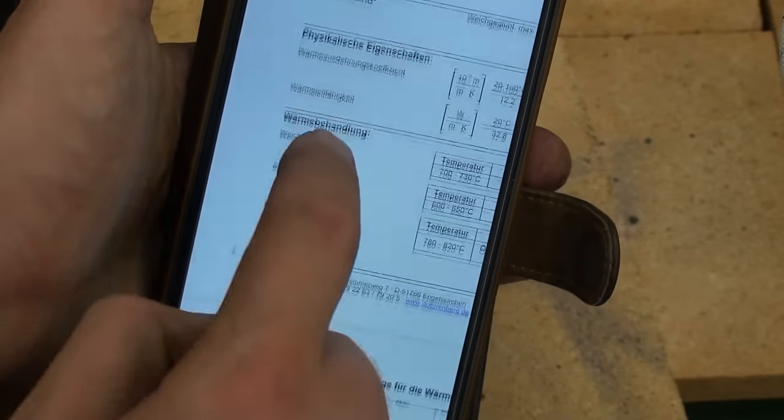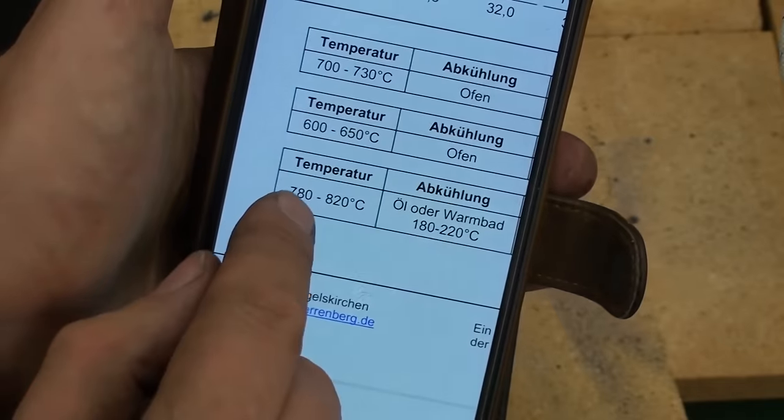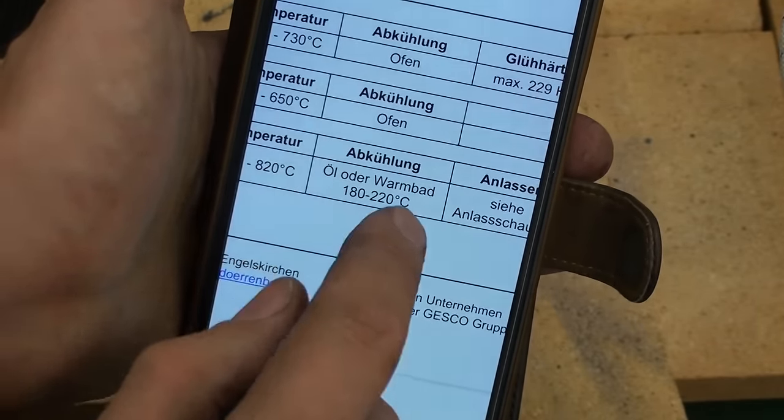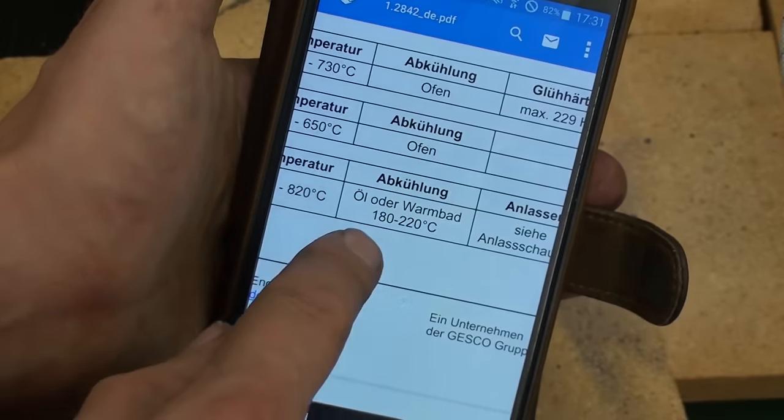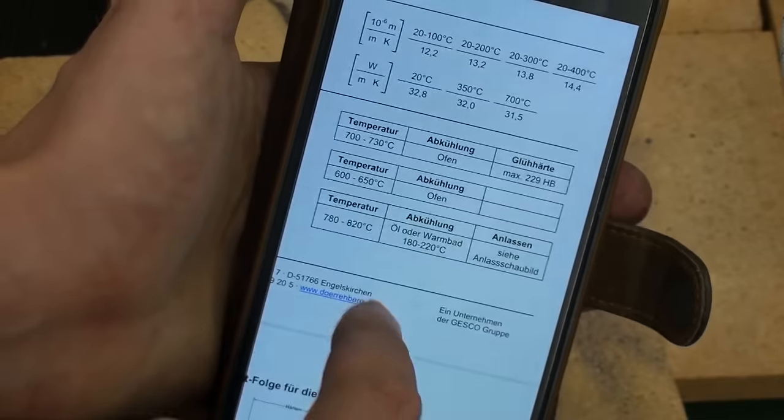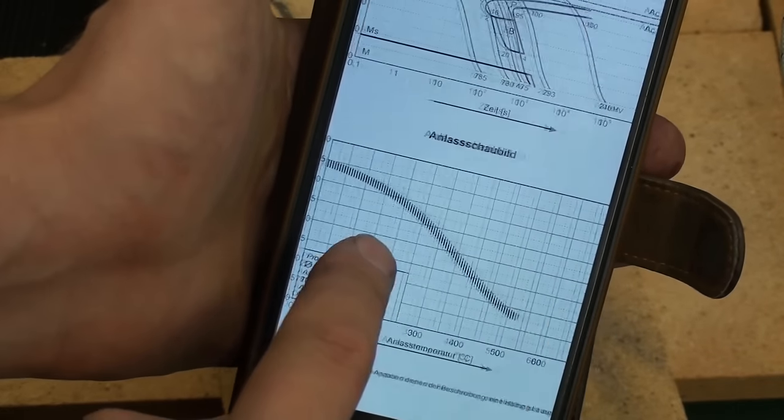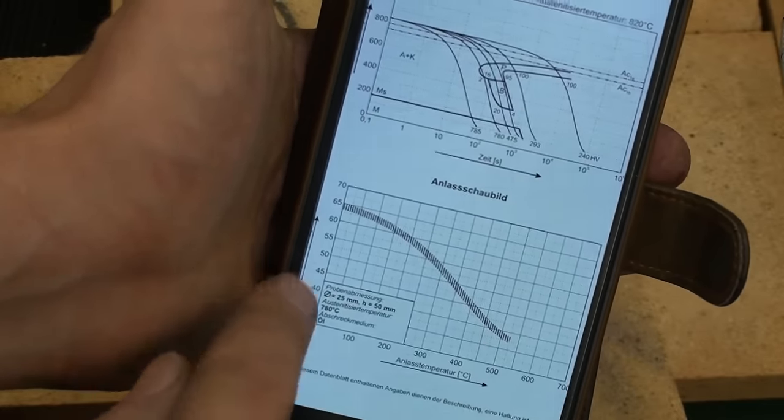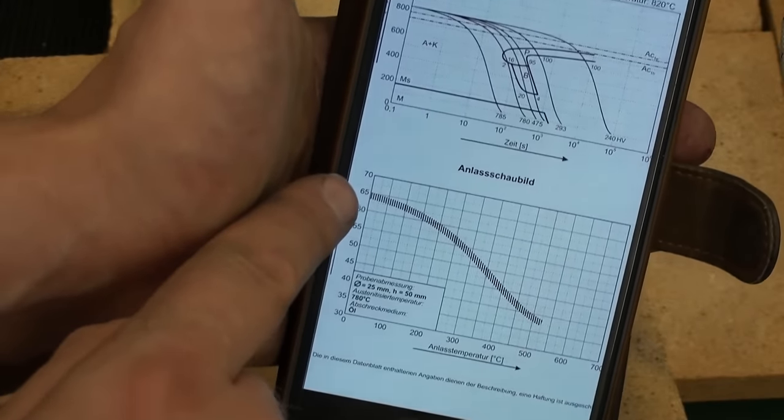When we go down to heat treatment, hardening temperature 780 to 820 degrees C and quenching in oil or hot bath. The hot bath is sophisticated stuff we can't do at home, but we can do an oil quench. Down here is the chart for tempering or annealing. We will not temper it, we will leave it at about 63 Rockwell C. So that's what we are going to do.